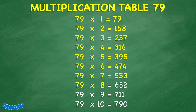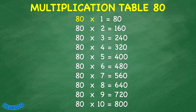79 times 8 equals 632. 79 times 9 equals 711. 79 times 10 equals 790. 80 times 1 equals 80. 80 times 2 equals 160. 80 times 3 equals 240.